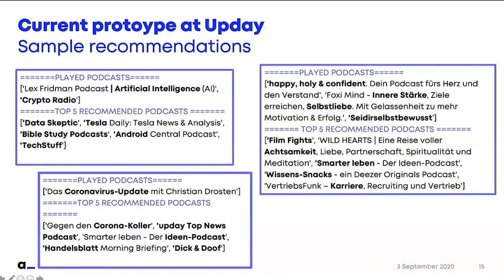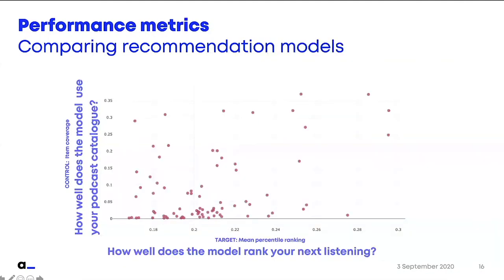Here on the bottom you see a quite common user type nowadays — a user that has just listened to something related to coronavirus. In this case the model would recommend, as the top five: something also about corona, then a news update podcast, and some other podcasts that are popular in our app. The model doesn't know much about this user — this is quite a sparse case — and the recommendations seem to be quite general.